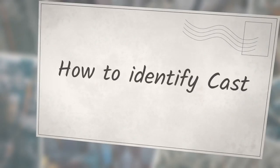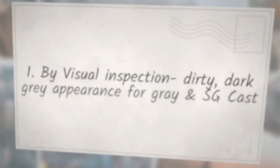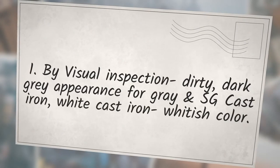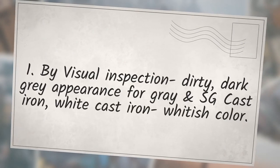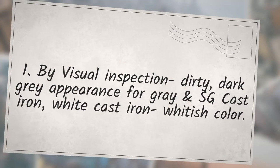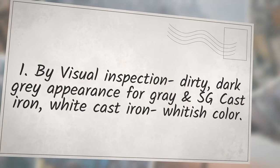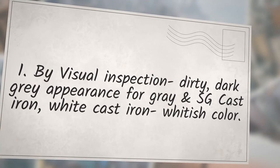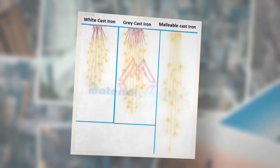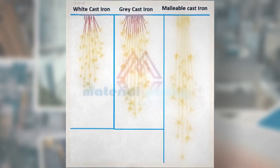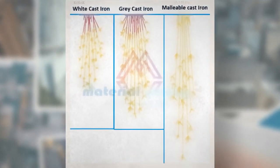How to identify cast iron type: one, by visual inspection — dirty dark gray appearance for gray and SG cast iron; white cast iron has a whitish color.